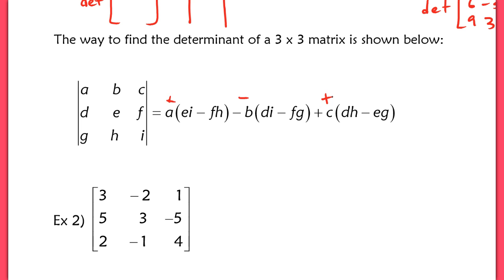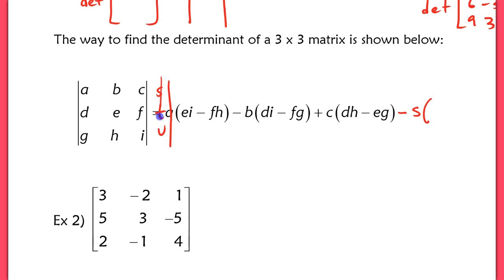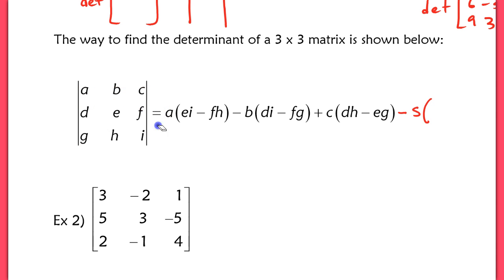If this were a 4x4, you'd have another column — say S, T, U — and you'd subtract S times the determinant of the leftover matrix. That's how you do it by hand.